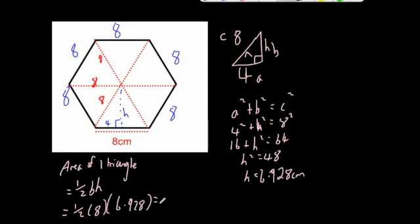And then we can work out the area of one of those triangles. So half times 8 times 6.928 gives you the area that one of the triangles would be equal to 27.712. So that means that one of the triangles is equal to 27.712 cm squared.